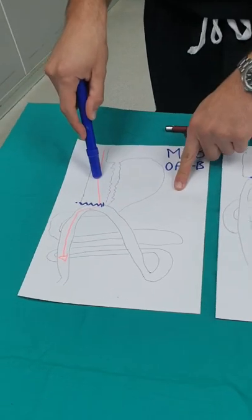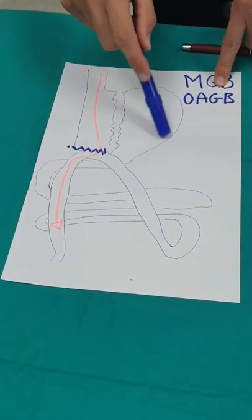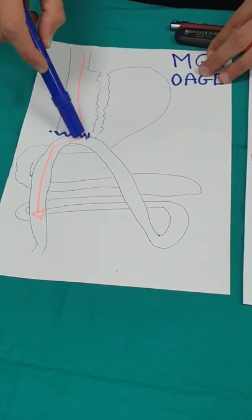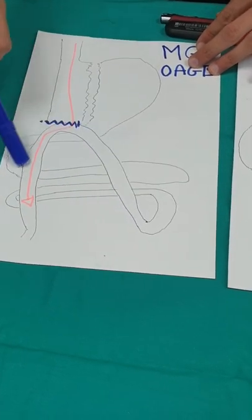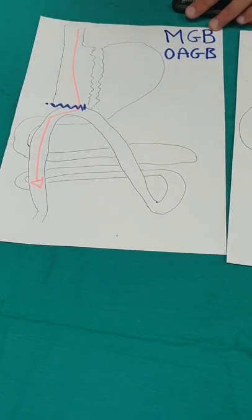One of the patients of today has a revision surgery. So what he had, he had a sleeve that didn't work. He's from Saudi Arabia. He had a sleeve that was done eight years ago, and he regained his weight, so he's coming over for the mini-gastric bypass. So when we go in, he shouldn't have this stomach, because remember, the sleeve, we take out this part of the stomach, so this is out, it's not present. So he will only have this part of the stomach. What we do, we're going to connect the bowel to it, only one connection, that's why it's called one-anastomosis gastric bypass.